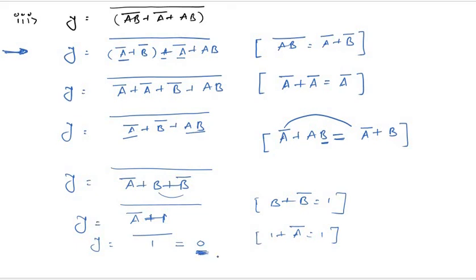These are the three examples showing how to minimize a given Boolean expression using the Boolean postulates. I hope you understood the examples we solved. In the next video we are going to discuss solved examples on K-maps — for two variables, three variables, or four variables. Thank you for watching.